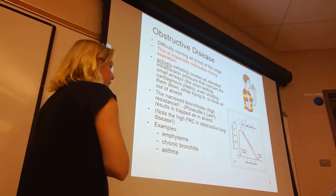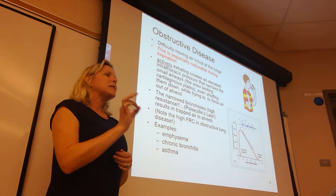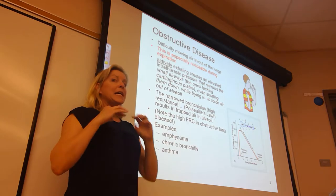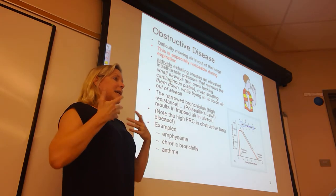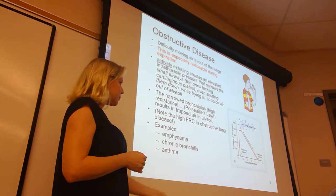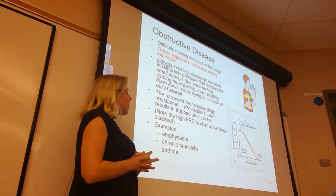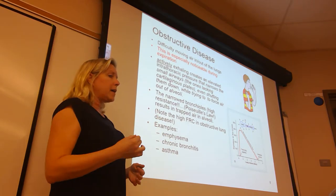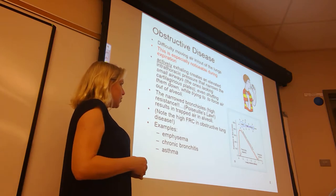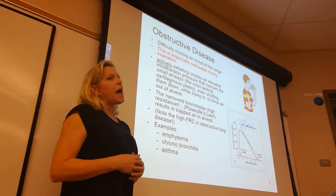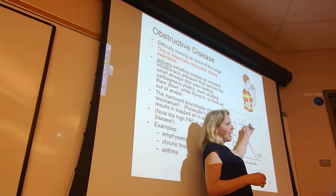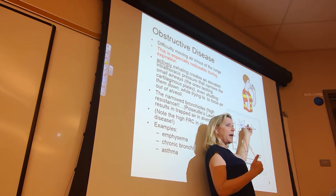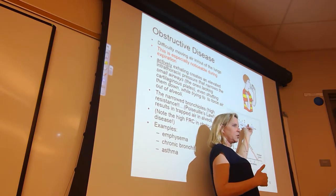Dempsey was just fine once he got his rescue inhaler, because albuterol stimulates beta-2 receptors, which causes smooth muscle to relax, increasing the radius of the air passageways so he could exhale better. The two other obstructive disease states also involve exhale and/or gas exchange problems. With all of them, you're going to have a lot of trapped dirty air. The amount of air left in your lungs at the end of a normal exhale is called functional residual capacity.